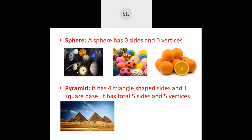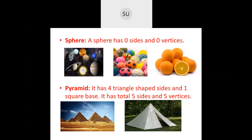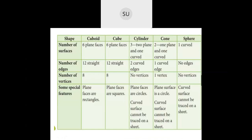A pyramid has triangle sides and a square base. Examples are the pyramids of Egypt or a tent. For the shapes we mainly study: a cuboid has six plain faces, a cube also has six plain faces, a cylinder has three faces total — two plain and one curved, a cone has two surfaces — one plain and one curved, and a sphere has only one curved surface.